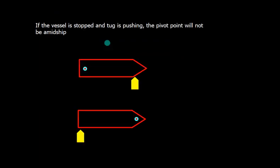Something very interesting. If the vessel is stopped and the tug is pushing, the pivot point will not be amidship. This is the vessel and the tug starts pushing from forward, then pivot point is going to be somewhere aft. Similarly, if the tug starts pushing aft, the pivot point is going to be somewhere forward.